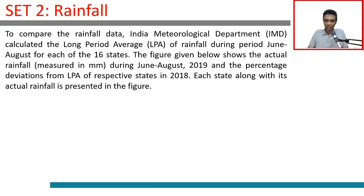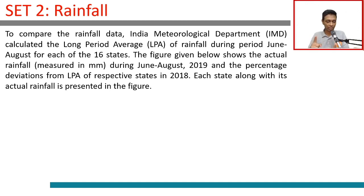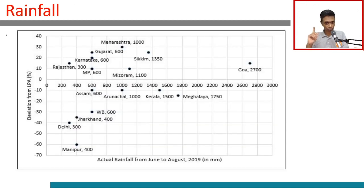To compare rainfall data, the Indian Meteorological Department calculated the Long Period Average (LPA) of rainfall during June to August for each of 16 states. The figure shows actual rainfall during June to August 2019 and the percentage deviations from the LPA of respective states in 2018. The LPA is the 10-year average, 2019 data gives the actual deviation from LPA — whether we are going better or worse than the long period average. It's a wonderful chart.